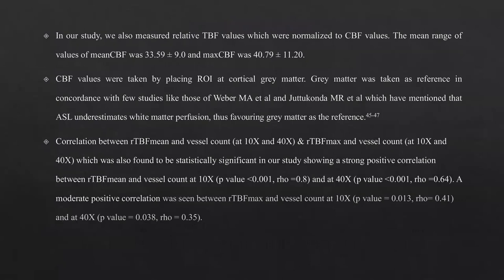Relative TBF values were normalized to CBF values. The mean CBF range was 33 ± 9 ml/min/100g and maximum CBF was 40 ± 11.2 ml/min/100g. CBF values were obtained by placing ROI at cortical gray matter using Steven images. Gray matter was chosen as reference, in concordance with studies by Weber MA et al. and Juttukonda MR et al., which noted that ASL underestimates white matter perfusion, thus favoring gray matter as reference. Correlations between RTBF mean and vessel count at 10x and 40x, and between RTBF max and vessel count at 10x and 40x, were all statistically significant, showing positive to moderate positive correlations.